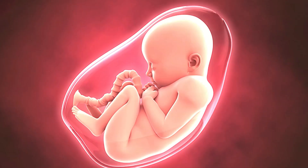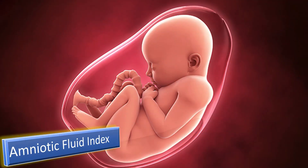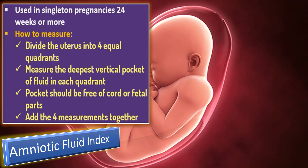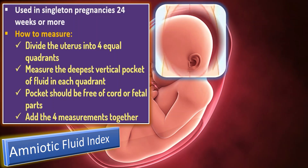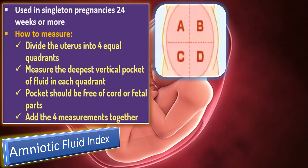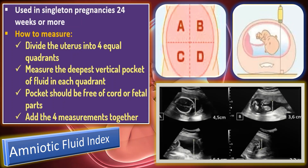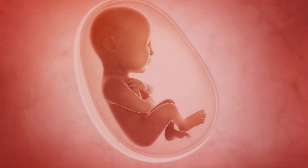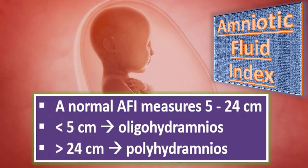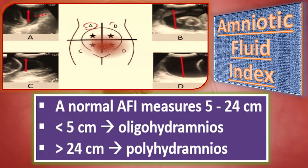The amniotic fluid index is used in singleton pregnancies of 24 weeks or more. To measure it, divide the uterus into four equal quadrants and measure the deepest vertical pocket of fluid in each quadrant. Pockets should be free of cord or fetal parts, then add the four measurements together. The normal amniotic fluid index is 5 to 24 cm. Less than 5 cm indicates oligohydramnios, and more than 24 cm indicates polyhydramnios.